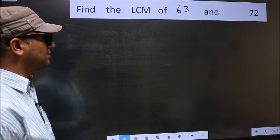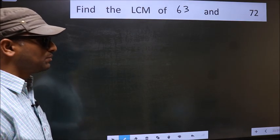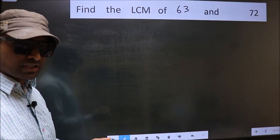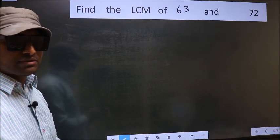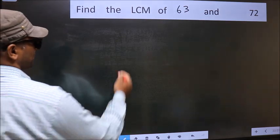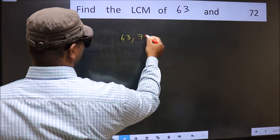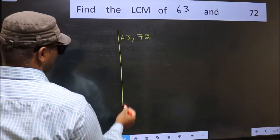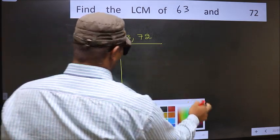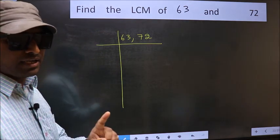Find the LCM of 63 and 72. To find the LCM, we should frame it in this way: 63 and 72. This is step 1.